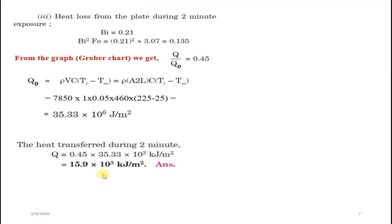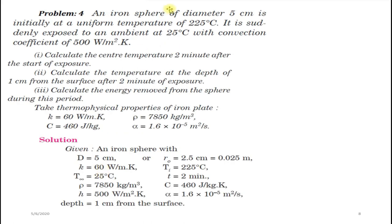Now the fourth problem: an iron sphere of diameter 5 cm is initially at 225°C. It is suddenly exposed to ambient air at 25°C with convection coefficient 500 W/m²K. Calculate the center temperature 2 minutes after exposure, the temperature at a depth of 1 cm from the surface, and the energy removed. Properties: K = 60 W/mK, ρ = 7850 kg/m³, Cp = 460 J/kgK, α = 1.6×10⁻⁵ m²/s.